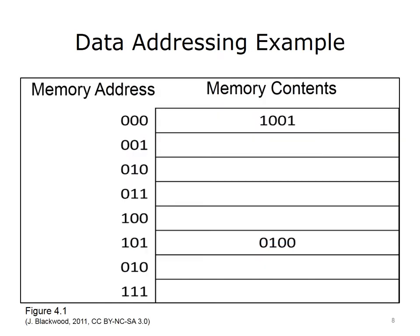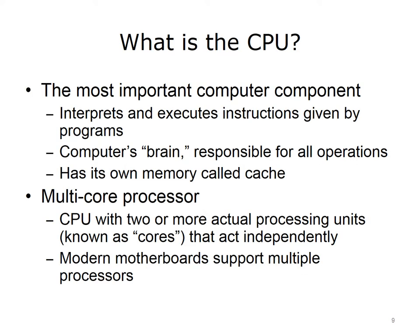Consider this example of data addressing. The memory address 000 has the contents in binary of 1001. In memory address 101, we have memory content in binary of 0100. Moving on to the second topic in this lecture, we will now discuss the central processing unit, or CPU.